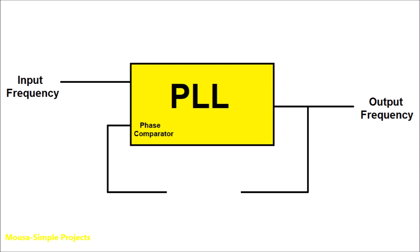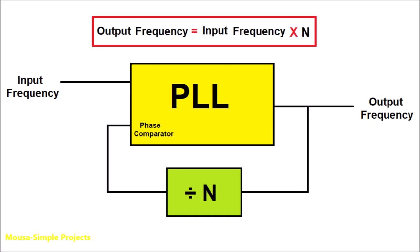But if you cut the feedback loop and put a frequency divider there, now it can multiply the frequency. The interesting thing is that any frequency multiplier has a frequency divider inside.